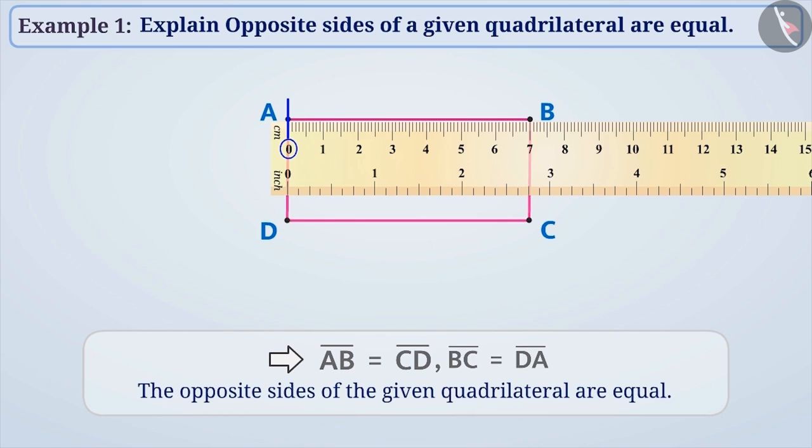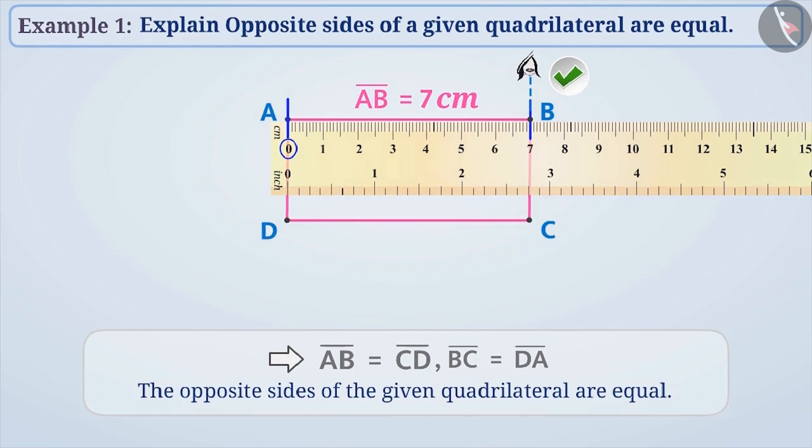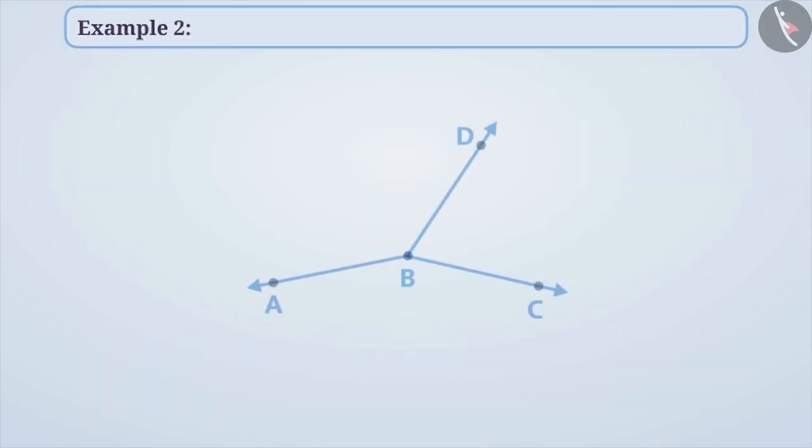Then, we will note the mark where point B is placed on the ruler. Keep in mind, while looking at the mark on the ruler, it is important to place the eye just above the mark. With this, we find that the length of AB is 7 centimeters. Example 2.